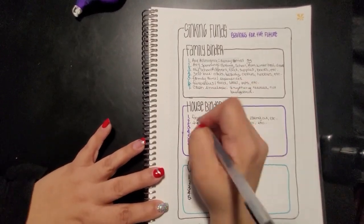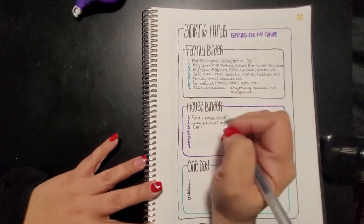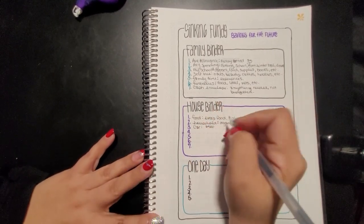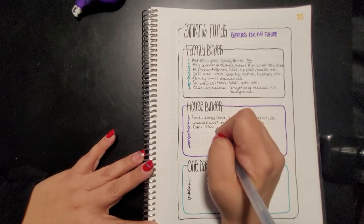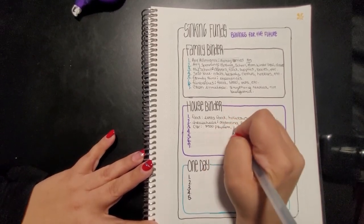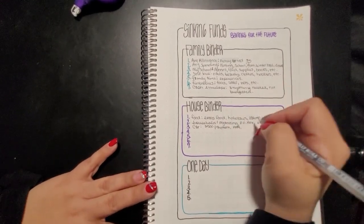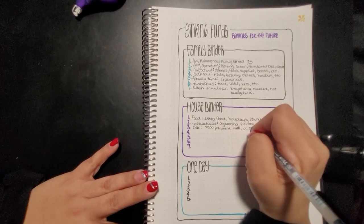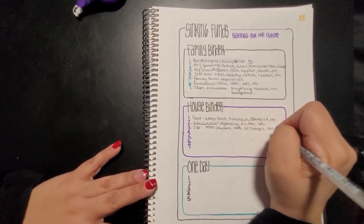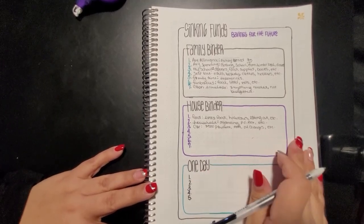Number three is going to be for the car. This one right here is because I owe five hundred dollars. I'm just going to put the payment, but this is going to be for Triple A, it's going to be for oil changes, etc. Anything needed for the car is going to come out of this envelope.